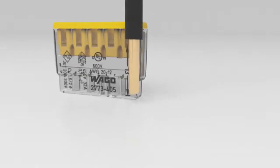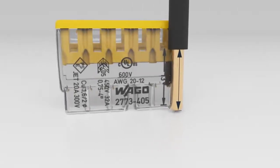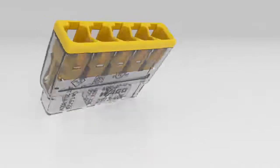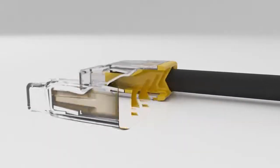Simply strip the conductor according to the strip length guide printed on the side of the connector housing. Insert the stripped conductor until it hits the backstop.